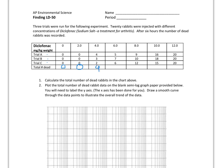At six milligrams per kilogram of weight, we add those together and get 18. Then nine plus ten plus twelve is thirty-one. At ten milligrams, we have sixteen, eighteen, and fifteen, which is forty-nine. And then the last one is sixty — so all of the rabbits are dead at this point.